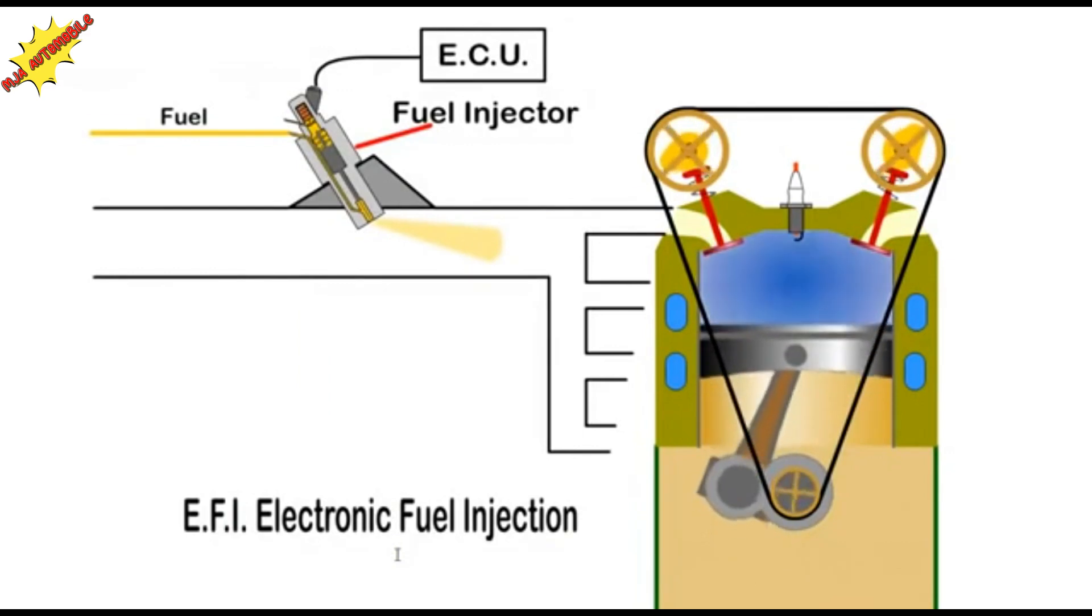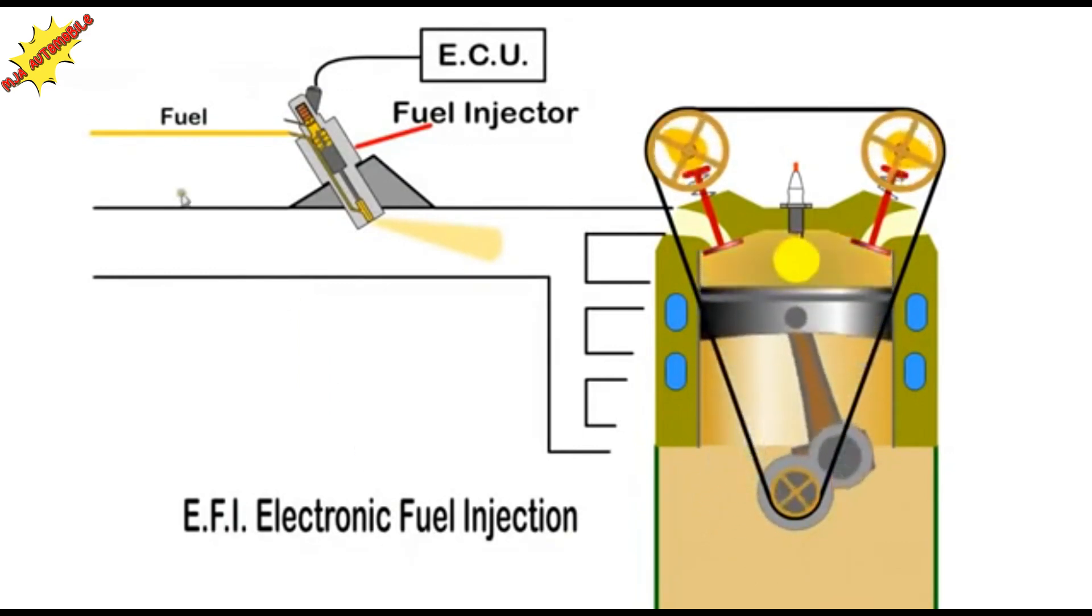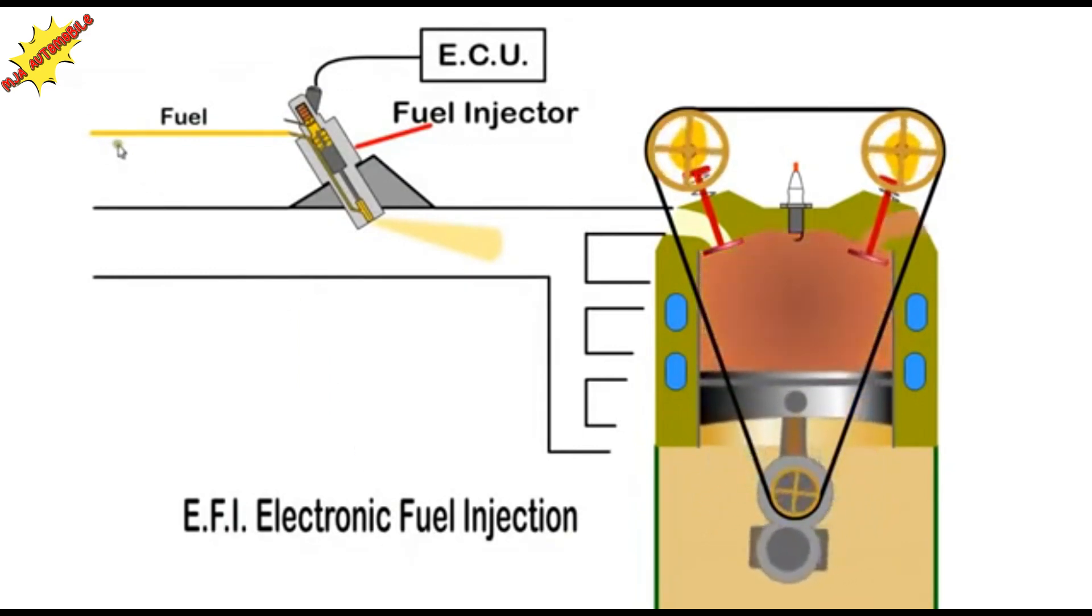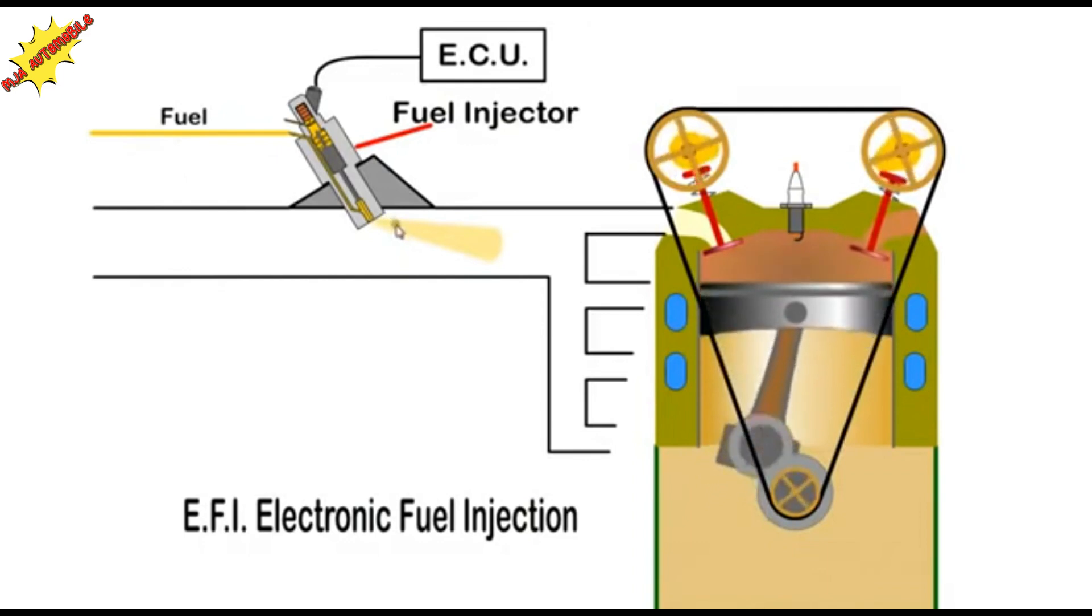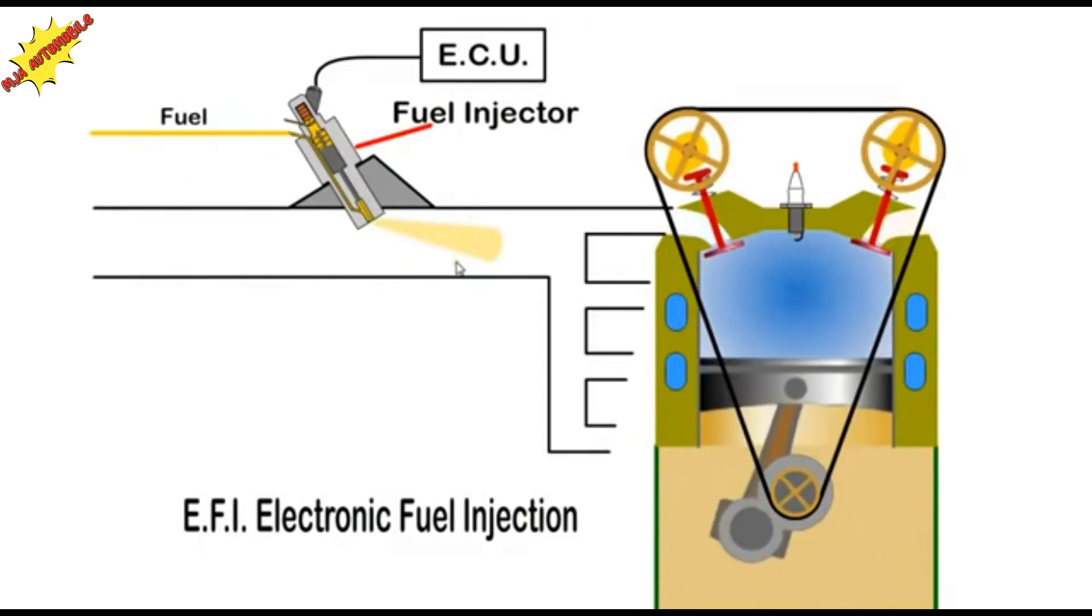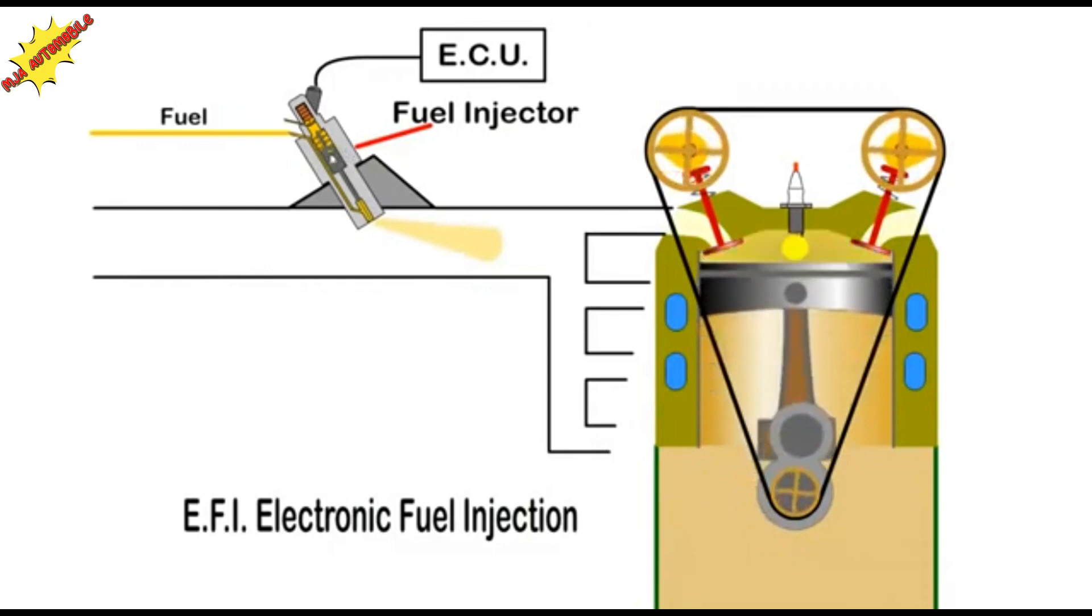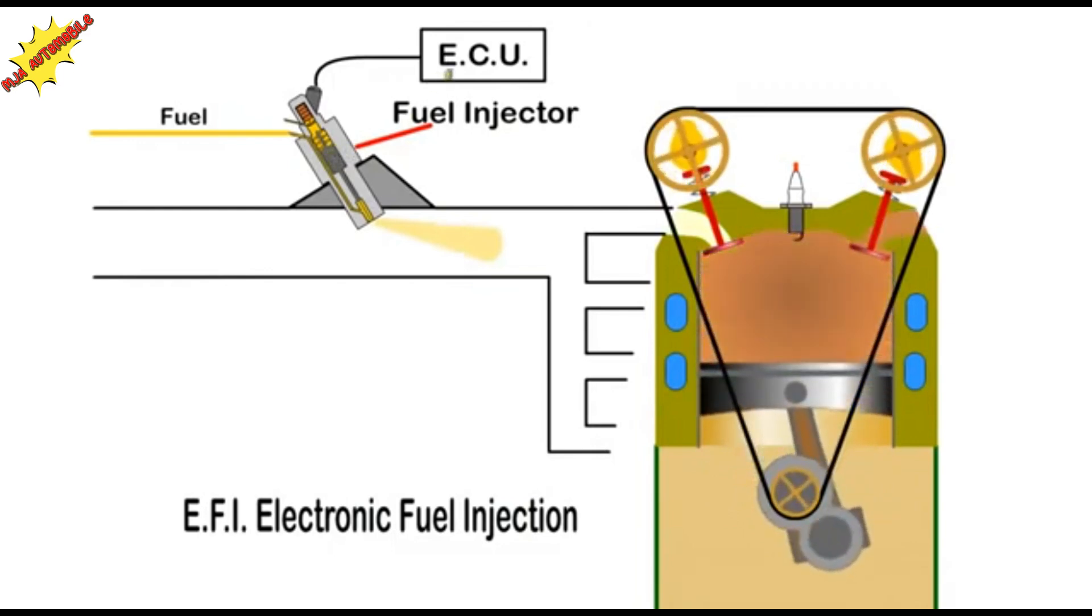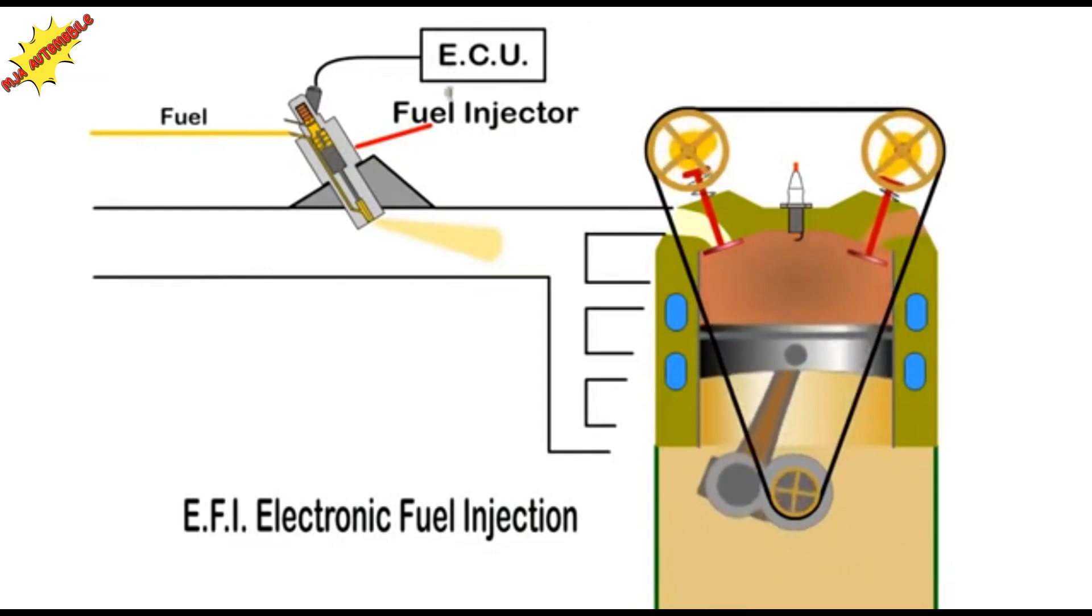With electronic fuel injection, EFI, a pump is used to pressurize the fuel, which is atomized by the injector as it enters the inlet manifold. An electrical solenoid is energized by the ECU, which determines the quantity of fuel required.